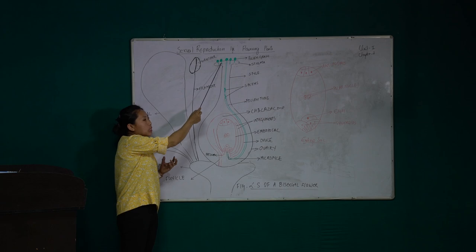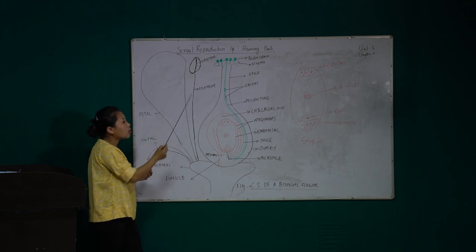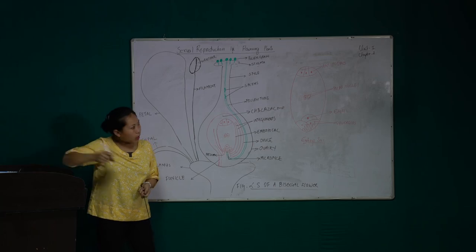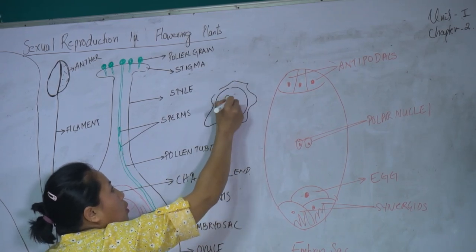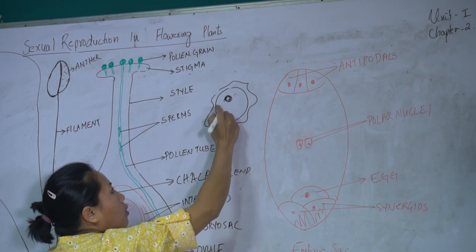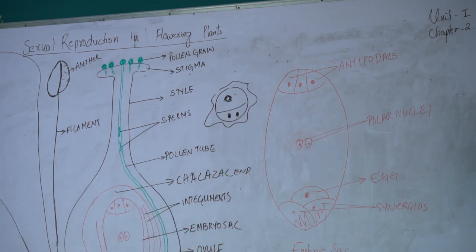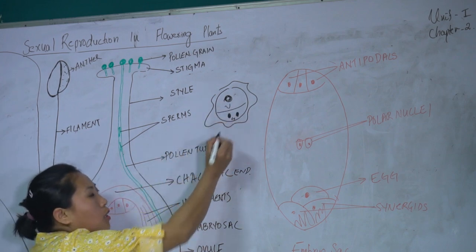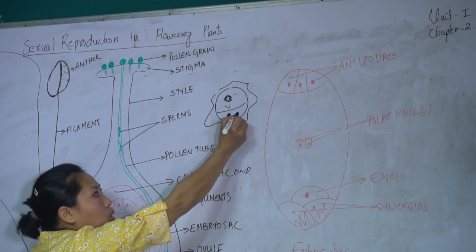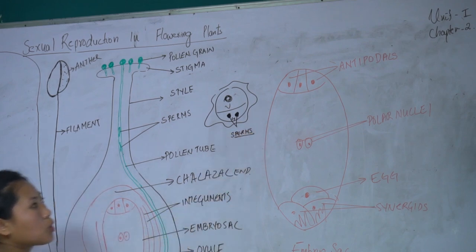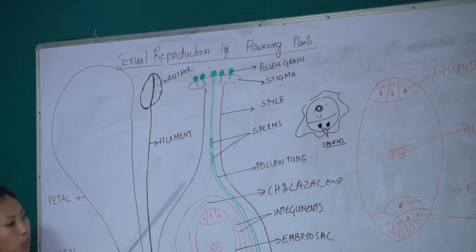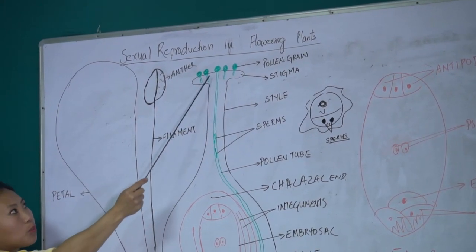Once the pollen grains land on the stigma, the pollen grain carries two sperms. A typical pollen grain consists of two cells: a vegetative cell and a generative cell. The nucleus of the generative cell divides to give rise to the sperms, and these are the units which take part in sexual reproduction.